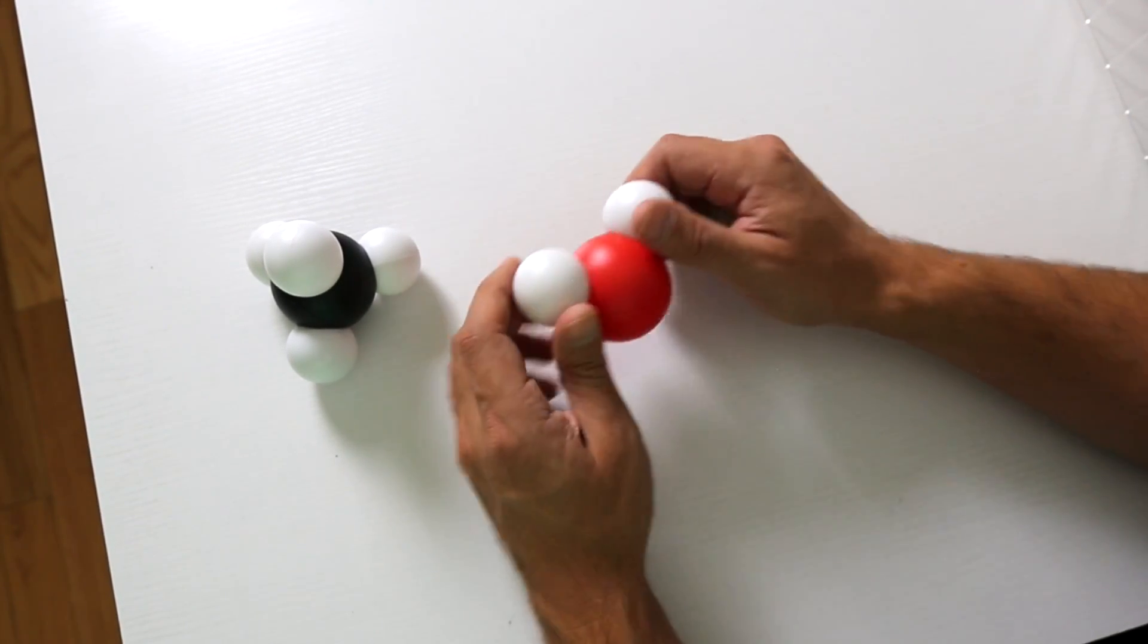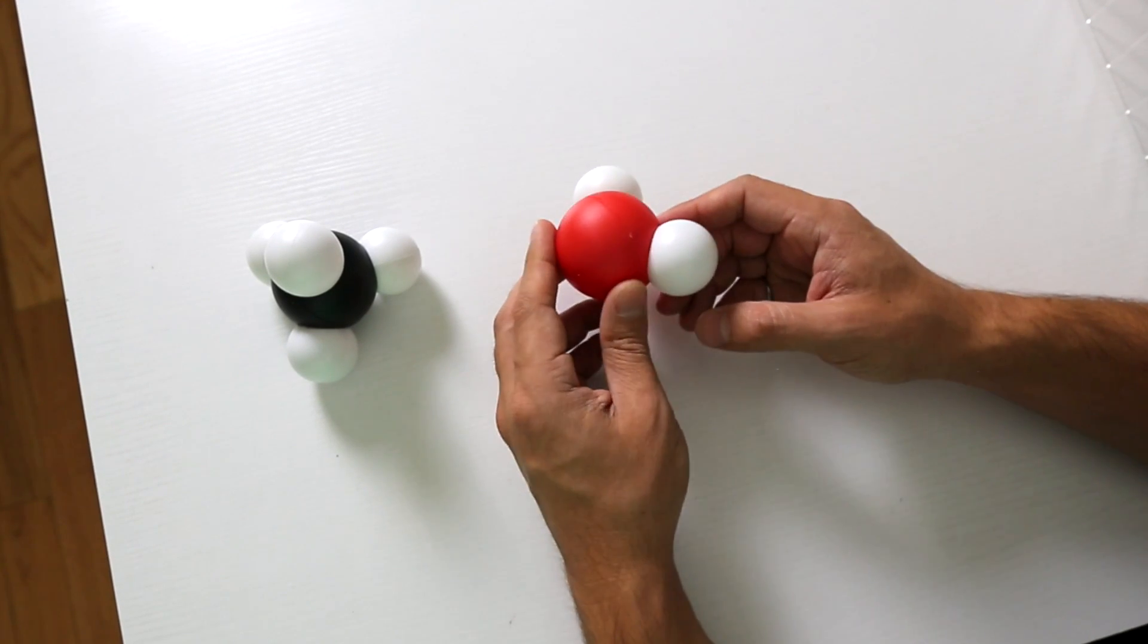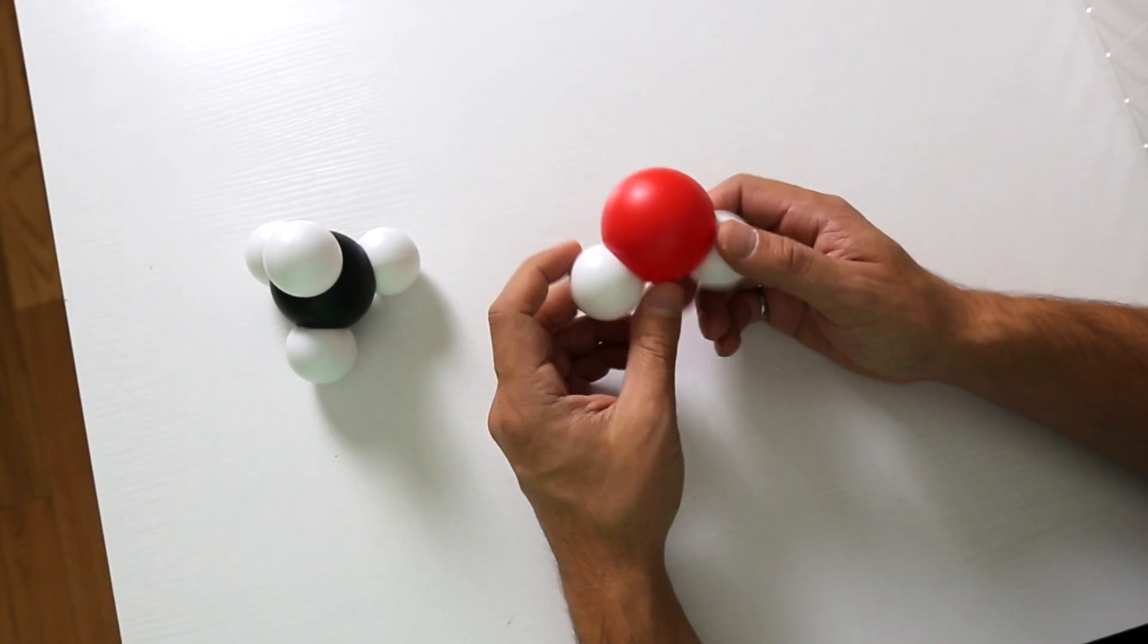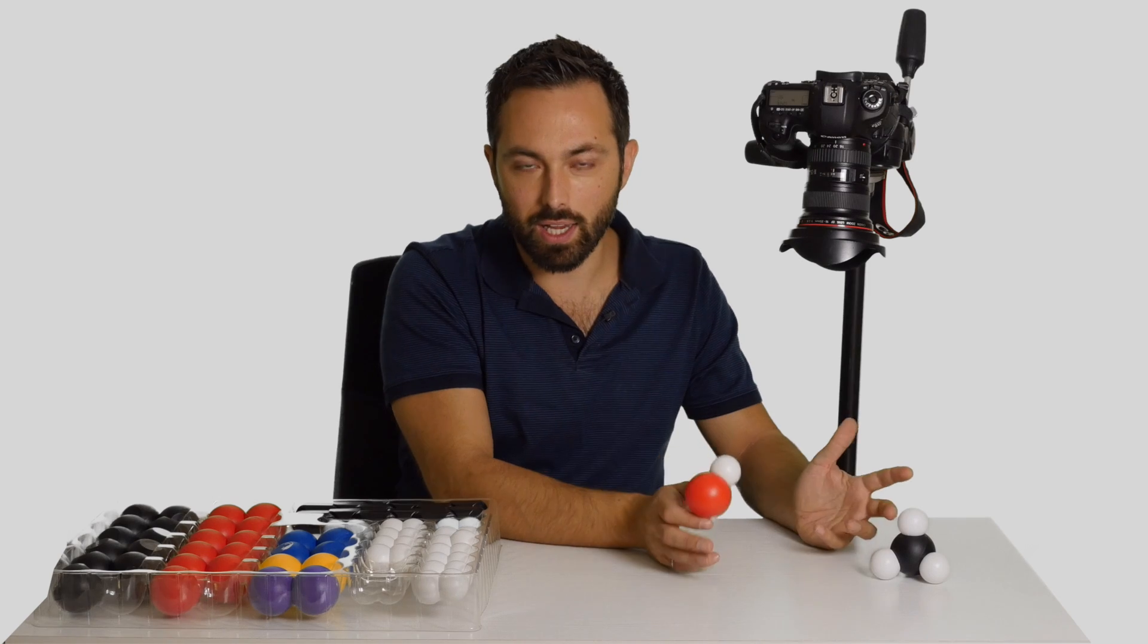Now instead, the hydrogens are more on one side than the other. Why is that? Well, the reason is again, electrons.